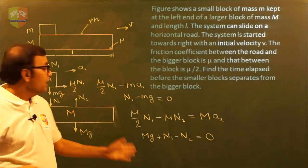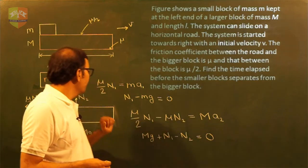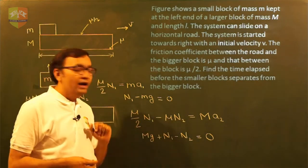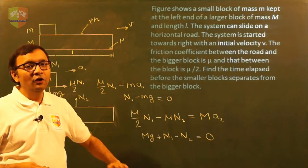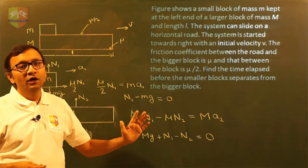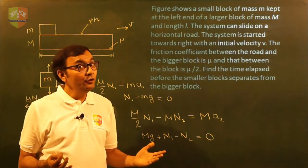So we have four equations. How many variables we have? We have A1, A2, N1 and N2. So we can solve these four equations to get the value of A1 and A2. So now we can assume that we have the value of A1 and value of A2.